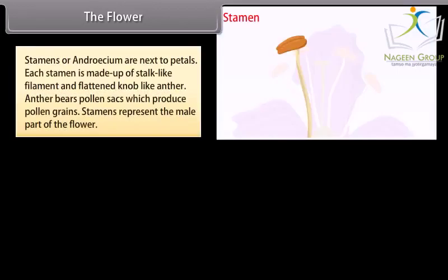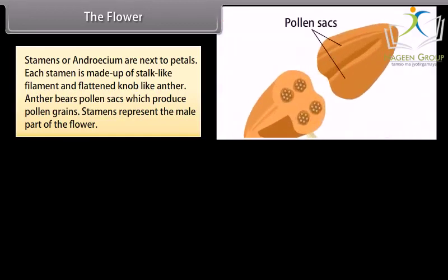Stamens or androecium are next to petals. Each stamen is made up of stalk-like filament and flattened knob-like anther. Anther bears pollen sacs which produce pollen grains. Stamens represent the male part of the flower.